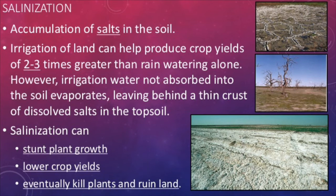Another major concern is salinization, or the buildup of salts in soils. Irrigated land sees a drastic rise in salt buildup because there is more water being sprayed in these areas than they would naturally see. Remember, fresh water still contains salts. The salts are not evaporated away with the water, so they are left behind. Improper irrigation techniques can stunt plant growth, lower crop yields, and kill plants or permanently ruin the land because you have exceeded the range of tolerance for salt of the organisms grown there.